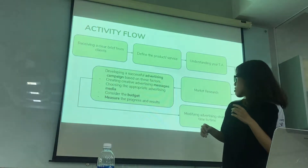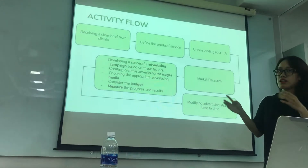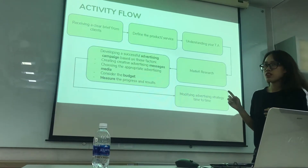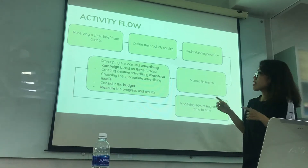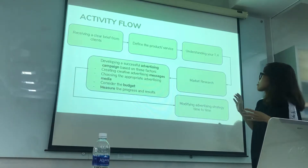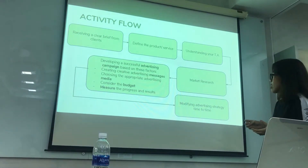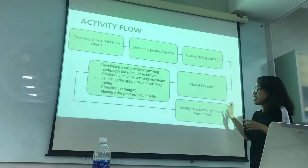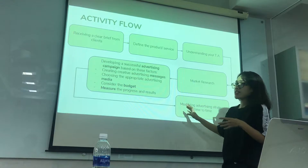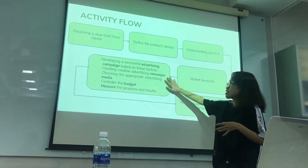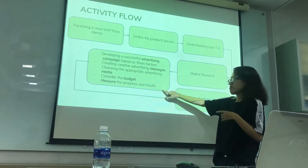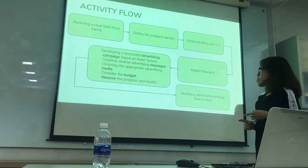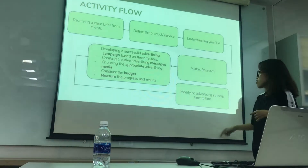Now I will introduce the flow of an advertising strategy. Here I list 6 steps. The first step is receiving a clear brief from clients, which we covered from the first topic presented by group 1. The second step is to define the product or service. Next is understanding your target audience. Then we make a small market research, and then we move to an important step — develop a successful advertising campaign based on the 5M framework: message, budget, measurement, and mission. The last step is to modify the advertising strategy from time to time.